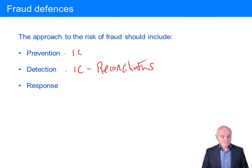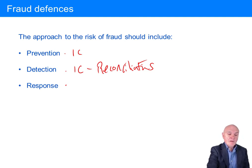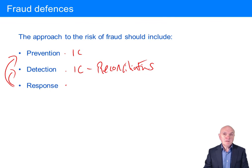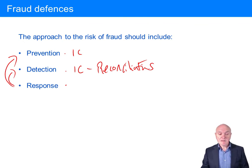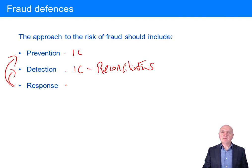Then there's response: what should we do? First, find out how it happened — and if we know how it happened, we can step up our prevention and detection methods. What do we do with the person who committed the fraud? Many businesses simply dismiss the person, try to get the money back, and keep it quiet because it's embarrassing — it reflects poorly on internal control and supervision.